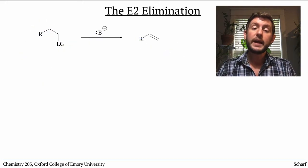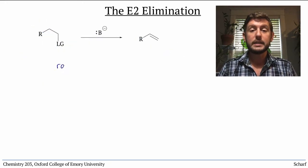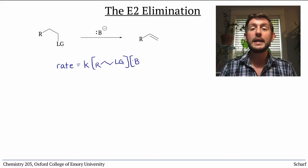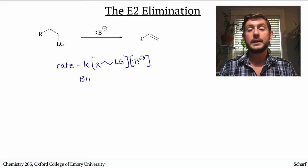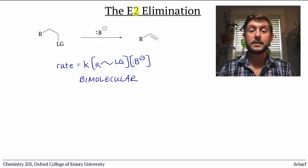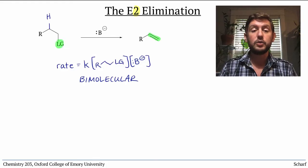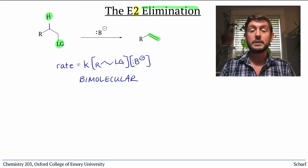This reaction is called the E2 elimination because it involves both the electrophile — the molecule with the leaving group on it — and the base, colliding in the rate-determining step. That is, it's bimolecular. And it produces a double bond by removing a leaving group and a proton on the adjacent carbon, so it's an elimination.